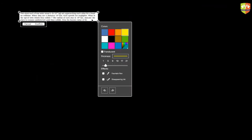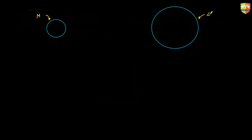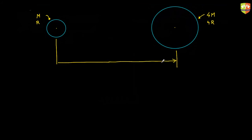Let me create a hypothetical question. Suppose you have two stars: one of mass M with radius r, and the other of mass 4M with radius 4r. The entire universe contains only these two. The distance between them is 10r. They are released from rest and start moving towards each other. Find the velocity of each star when they collide.